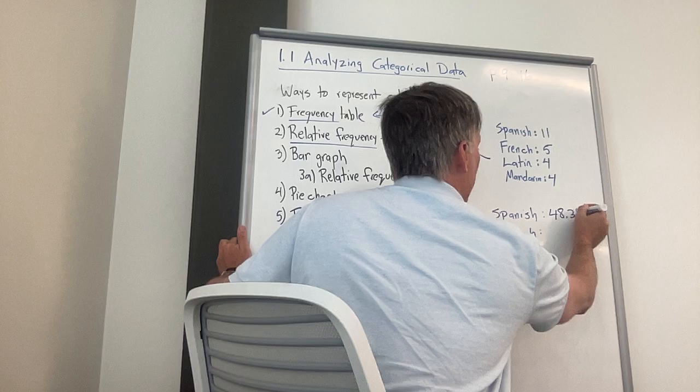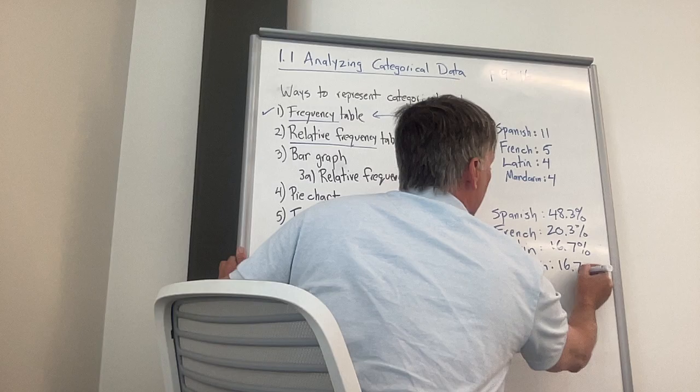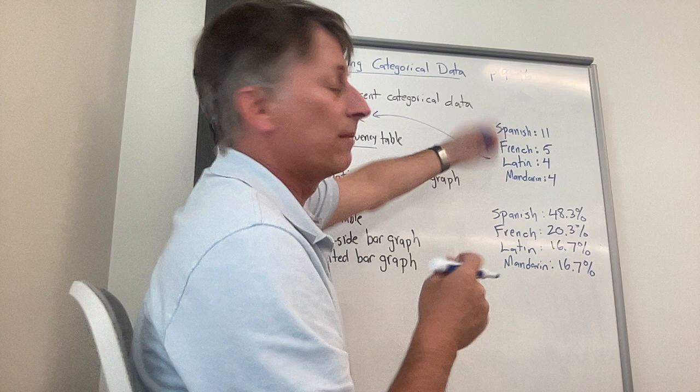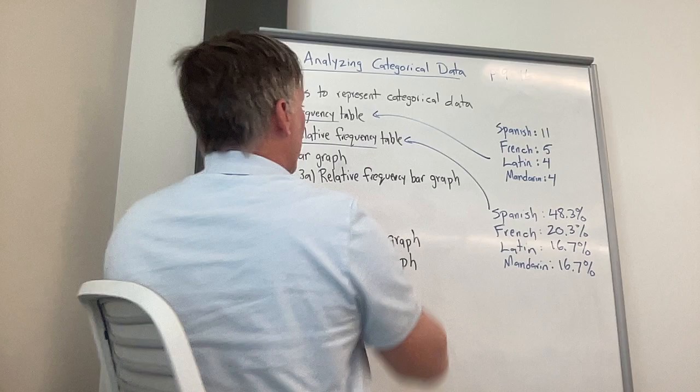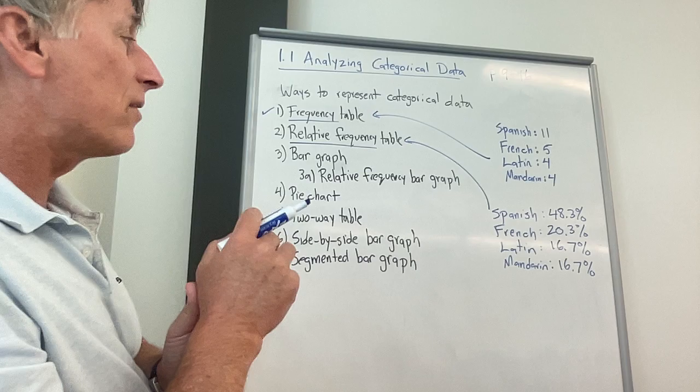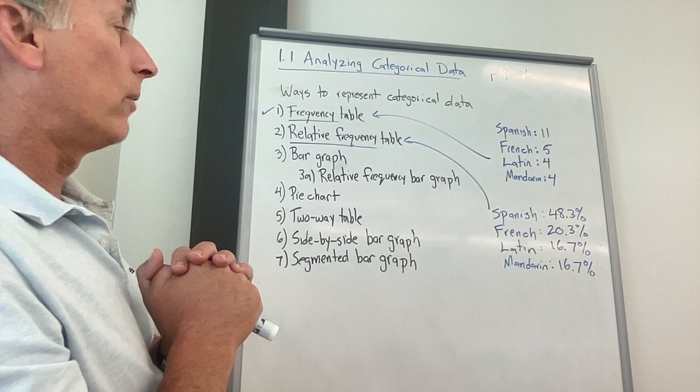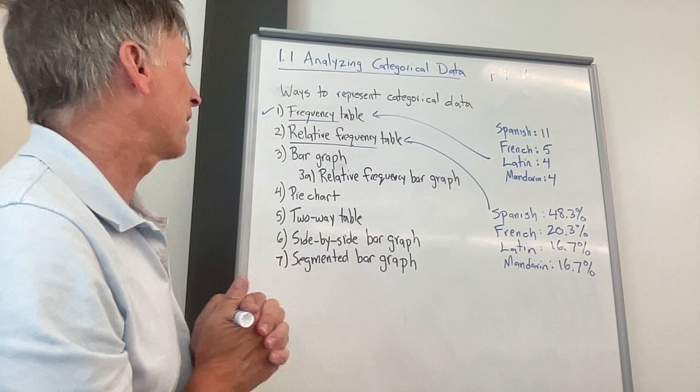Now I'm going to list them not as frequencies, but as relative frequencies, which means as percents. I've done the division here. This is roughly 48.3%. French is 20.3%. Latin and Mandarin are 16.7%. How do I get that 48.3%? Literally, it's just 11 divided by 24, which is the total, and did it all the way down. So this is a relative frequency table. What you're really getting there is that the term frequency means counts. The term relative frequency just means percents. I wrote them here as percents rounded to one decimal place. We'll be very fast and loose with both the number of decimal places.